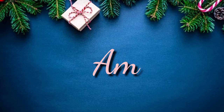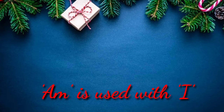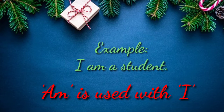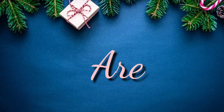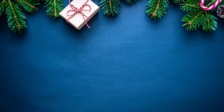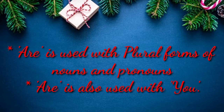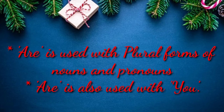The next one is 'am'. When do we use 'am'? We use 'am' only with 'I'. Example: I am a student. Moving to the last among the forms of 'to be' — 'are'. We use 'are' with plural forms of nouns and pronouns, and we also use 'are' with 'you'.